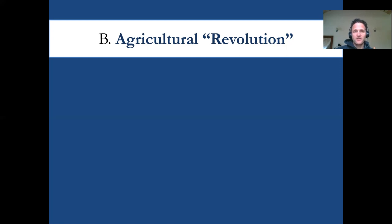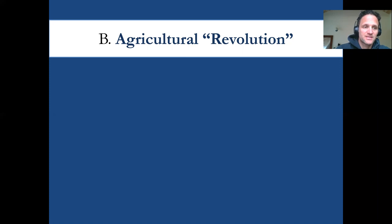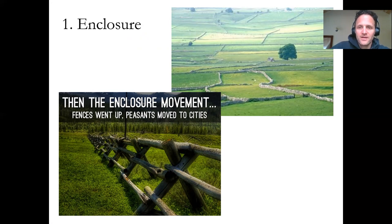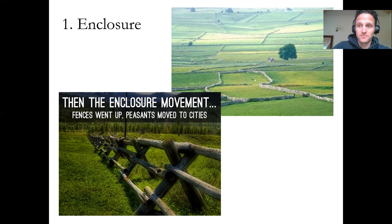Another important precursor to any society's ability to industrialize is a strong agricultural foundation. Throughout the 16th and 17th centuries, England underwent something known as the Agricultural Revolution — basically a growth in food production and population. One important step of this agricultural revolution was enclosure: fences went up and closed off what used to be communal land, making that land private. Landowners started owning more land, devoting it to farming single crops, and it forced a lot of peasants to work on these larger farms instead of producing small amounts for themselves.